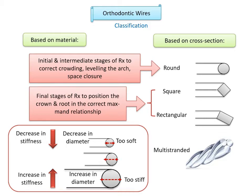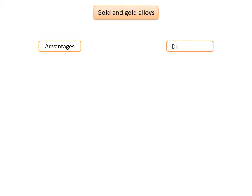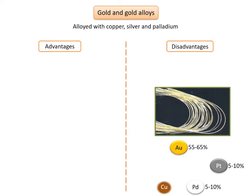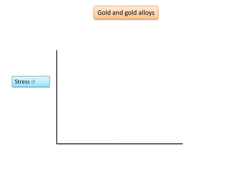Now let's look at individual wire types one by one. Gold and gold alloys are the earliest metals used in the manufacture of orthodontic arch wires. The alloy composition is gold 55–65%, platinum 5–10%, palladium 5–10%, copper 11–18%, and nickel 1–2%. This composition was similar to that of Type 4 gold casting alloys. Before discussing the advantages and disadvantages, let's review some mechanical properties of dental materials in relation to the stress-strain graph.